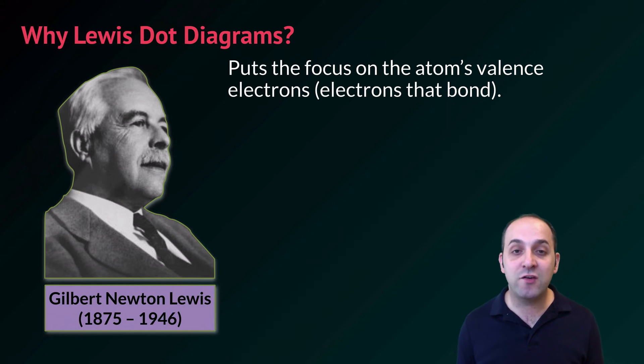A Lewis dot diagram shows an atom's valence electrons, which are the only electrons involved in chemical bonds. If we want to investigate how atoms bond, we don't need to worry about the kernel electrons. We only need to worry about the valence electrons.